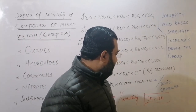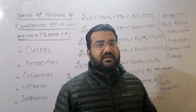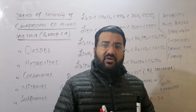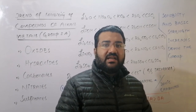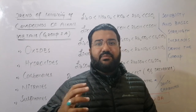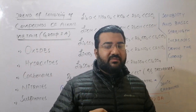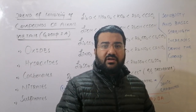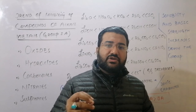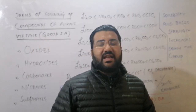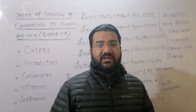An important point to keep in mind: compounds of alkali metals are always more soluble in water compared to alkaline earth metals — whether oxides, hydroxides, carbonates, nitrates, or sulfates — because of their lower lattice energy compared to Group 2A compounds. Therefore, oxides and hydroxides of alkali metals are more soluble and more basic than those of the alkaline earth metals. This concludes the trend in solubility of alkali metal compounds.